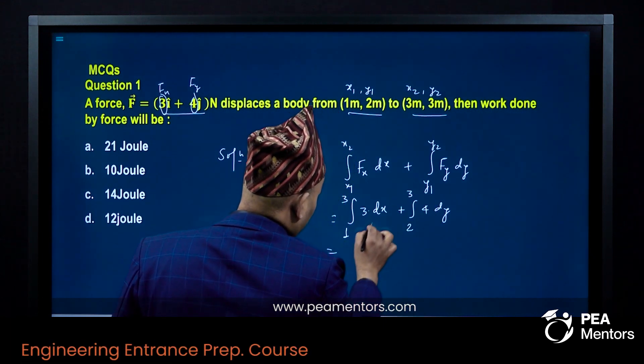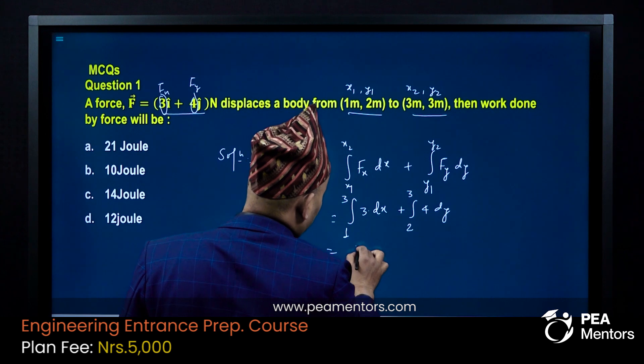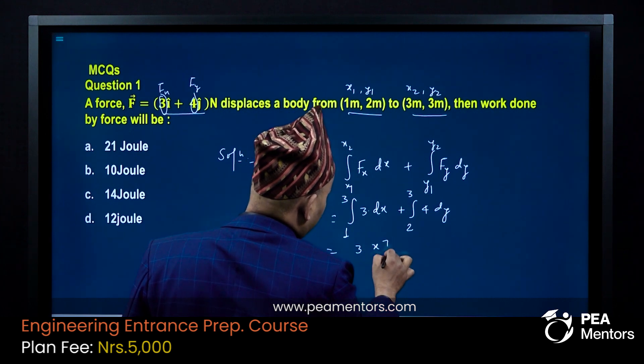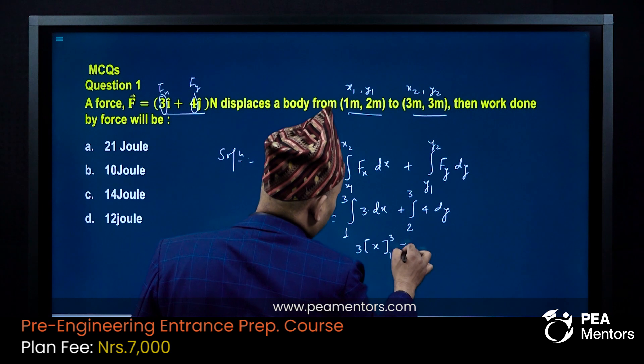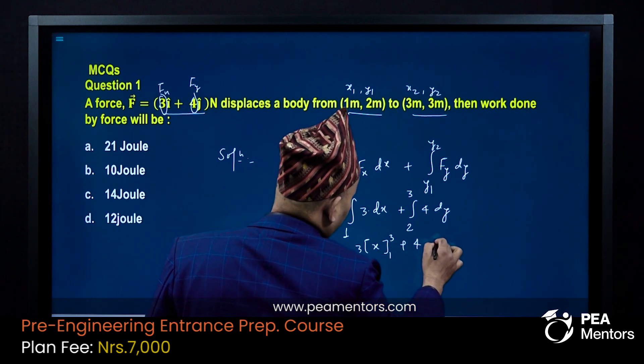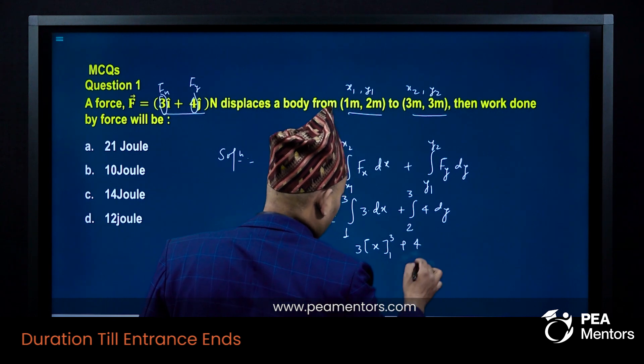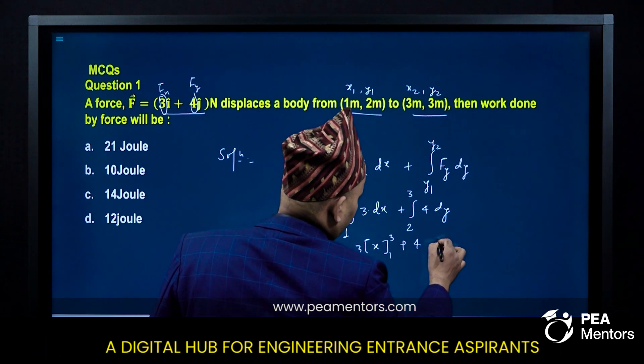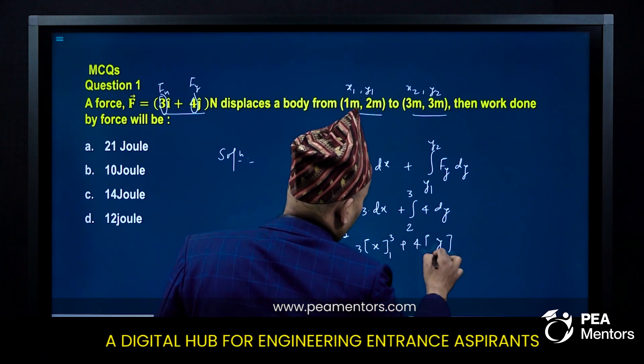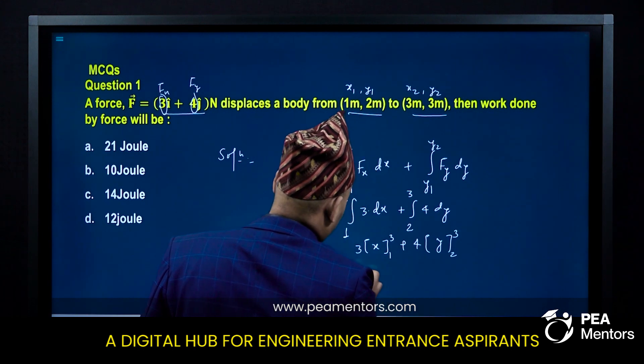Integration of x, so this becomes 3 into x from 1 to 3, plus 4 into y. dy integration is y, so 4 into y from 2 to 3.